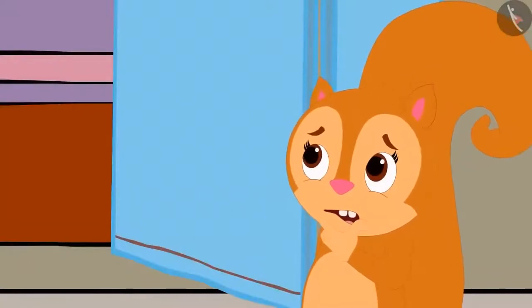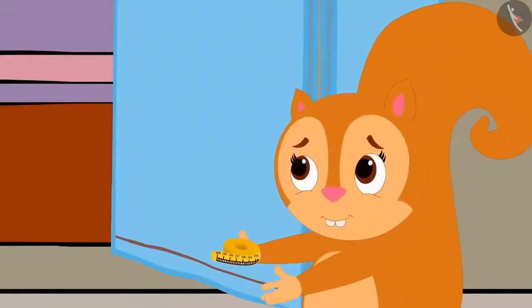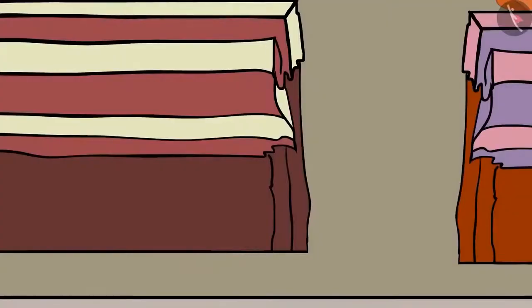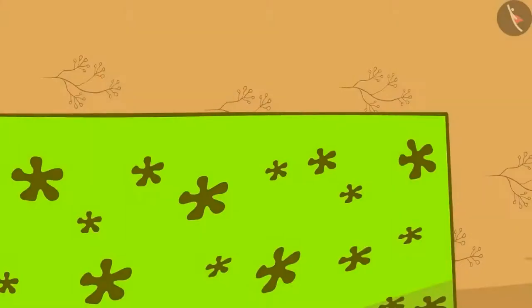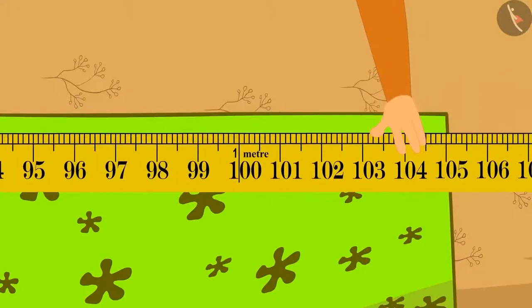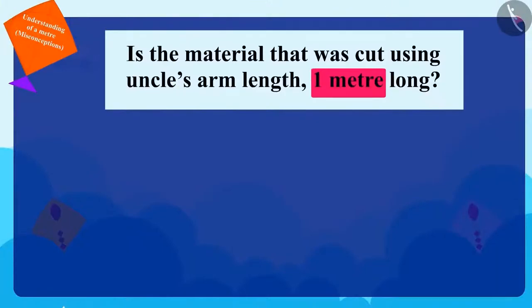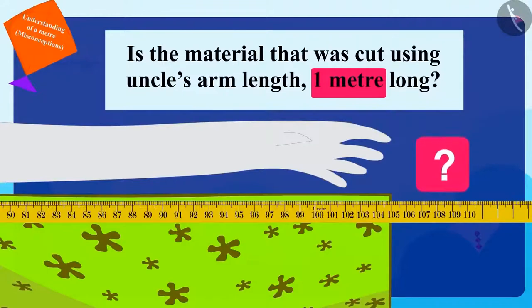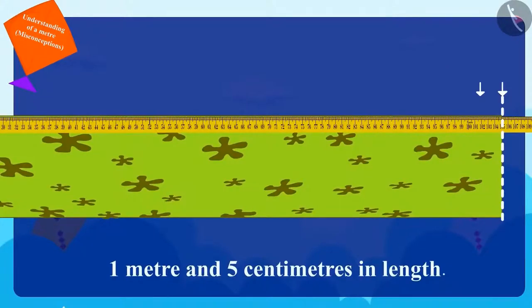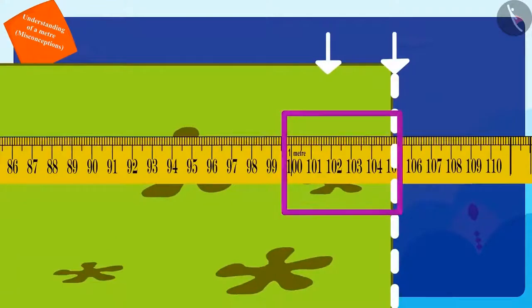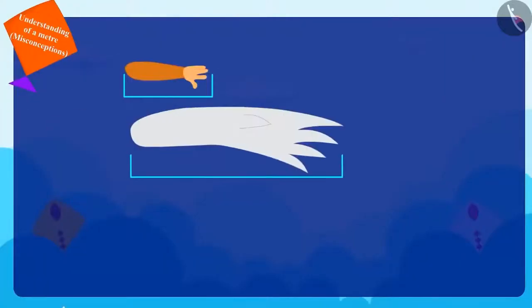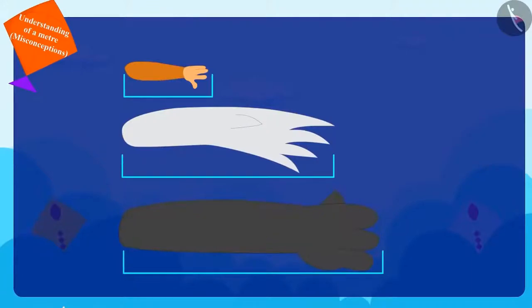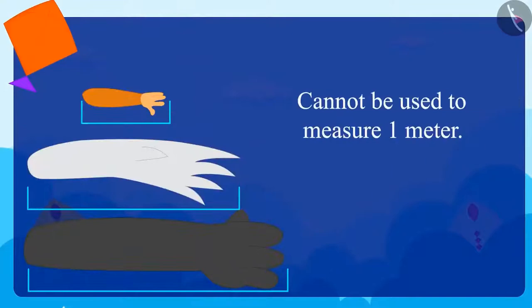Chanda was surprised. She had her measuring tape along. As soon as uncle cut Golu's material, she took it from Golu and immediately measured it with her measuring tape. Children, is the material that was cut using uncle's arm length one meter long? No. Uncle gave one arm long material which is one meter and five centimeters long. Chanda explained to Chacha and Golu that the length of one arm varies for everyone, so they cannot use it to measure one meter.